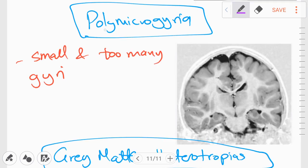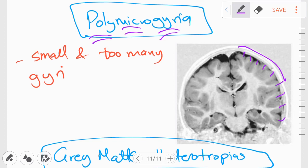The next disorder is called polymicrogyria. In polymicrogyria, as the name itself suggests, there are many small gyri. And here you can see that we have 1, 2, 3, 4, 5, 6, 7, 8, 9 gyri at the same time on one part of the brain.